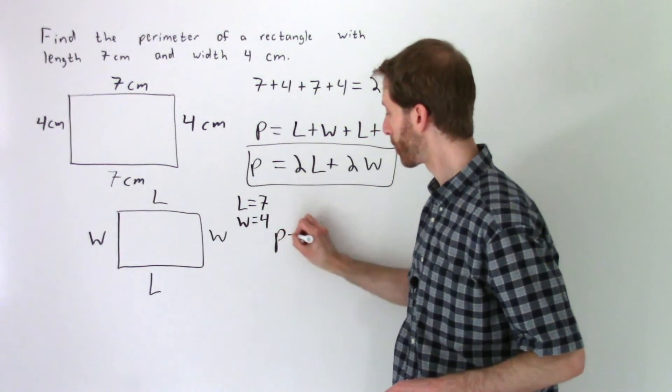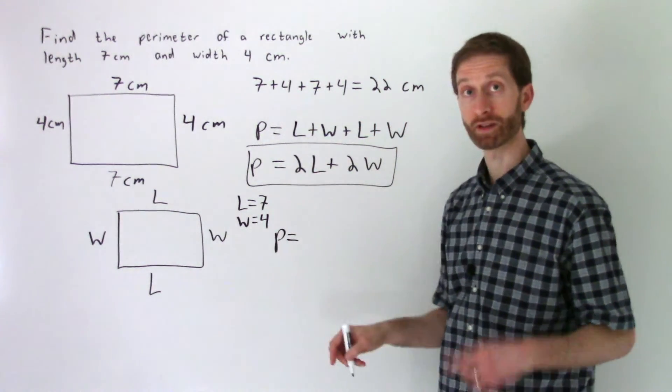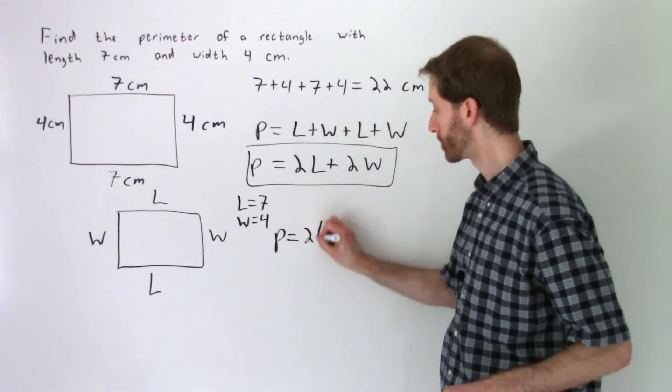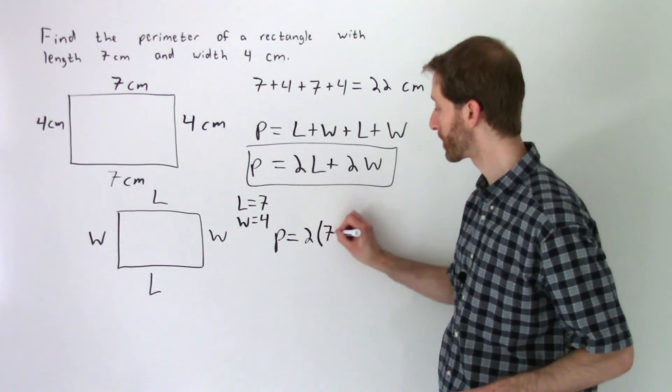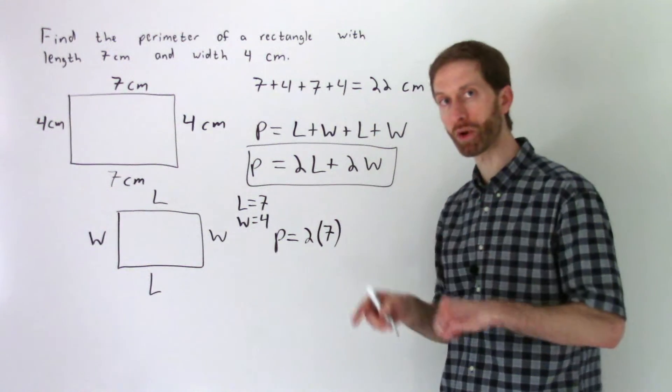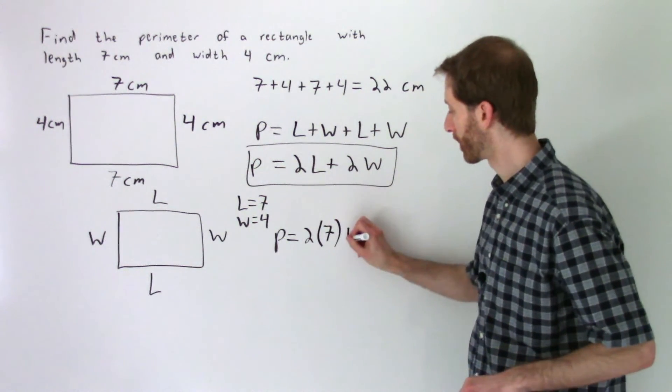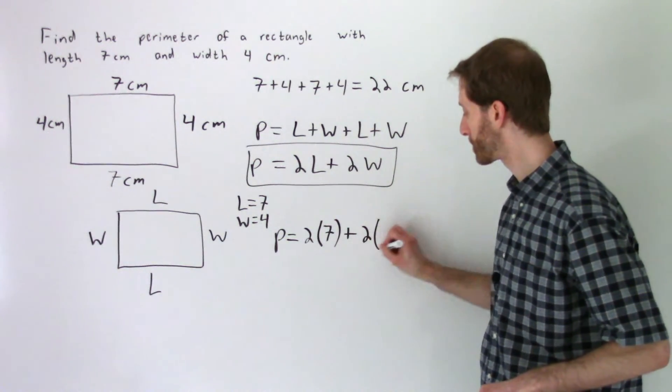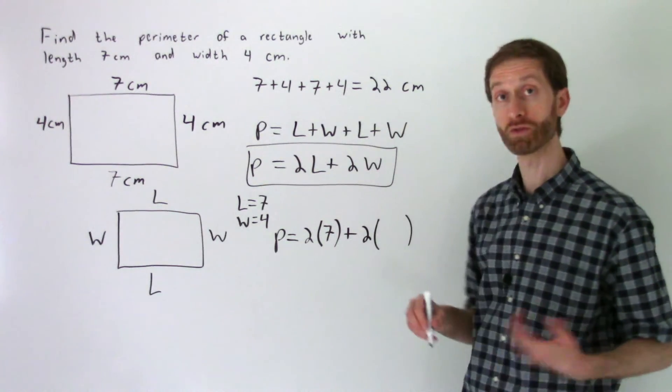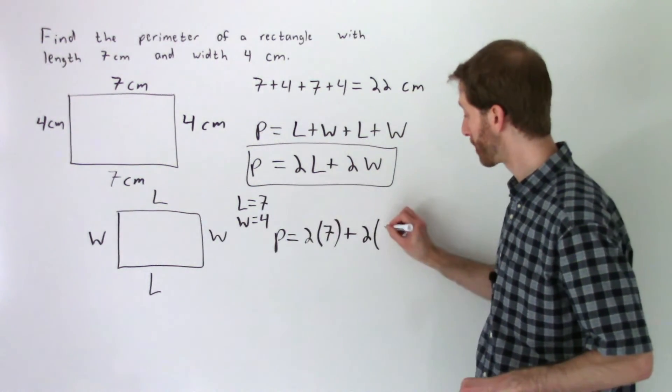So in our formula, we can replace L with seven. It tells us to do two times L. So two times, I always put parentheses to show that we're inputting a seven in there. I'll show that a little clearer here. Two times W, you would have parentheses there to represent the W value, and the width is going to be four.